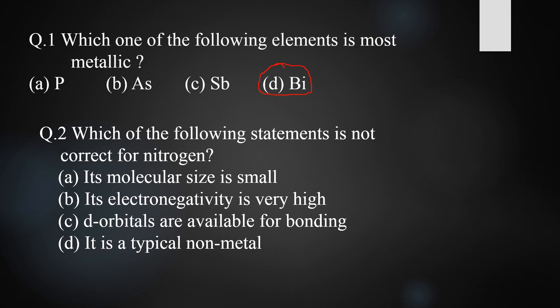The incorrect statement for nitrogen is option C, since nitrogen does not have d-orbitals available for bonding — it has no d-orbitals in its valence shell. Options A and B are correct: nitrogen is smaller in size and has very high electronegativity, as electronegativity decreases down the group. Option D is also correct — nitrogen, being the first element of Group 15, is a typical non-metal.